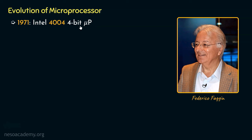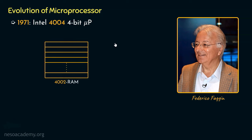What does 4-bit mean here? It refers to the word length of the microprocessor. Word length defines the size of binary data the processor can handle at once. Intel's 4004 microprocessor could handle 4-bit data at once. All the different memory devices supporting the Intel 4004 were also built with the handling of 4-bit data in mind. The 4002 RAM, as mentioned earlier, is a 40-byte RAM.